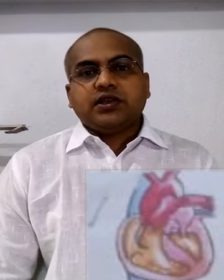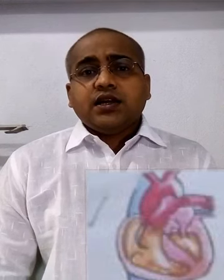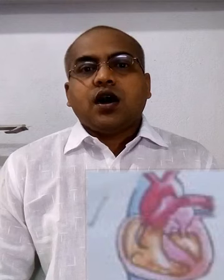Now let's discuss immovable joints. The best example is our skull — the bones are fixed in the skull and have very little space between them, which acts like a cushion to absorb shocks. These bones are fixed in a way that does not allow any type of movement. Only the lower part of the skull can move slightly.